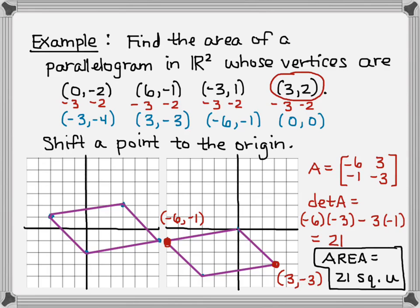This is an area, so the answer is 21 square units. That's all there is to finding the area of a parallelogram: shift so one point is at the origin, take the two adjacent points, make your matrix, and take the determinant.